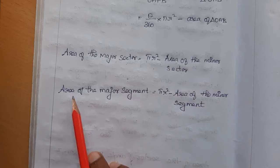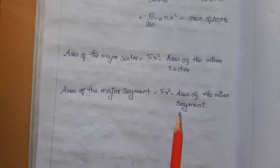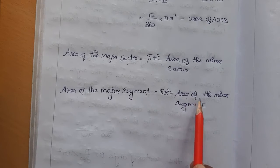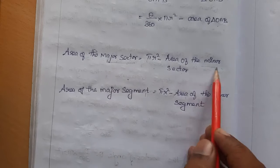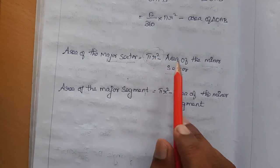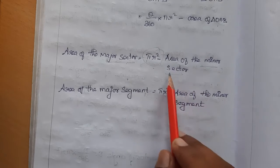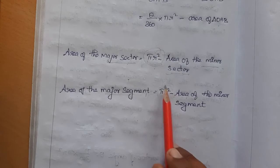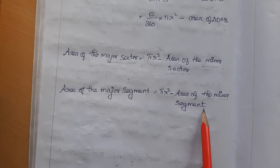For the area of triangle OAB, we can use (1/2) × base × height, Heron's formula, or the equilateral triangle formula depending on what is given. For the major segment: area of major segment = πr² minus area of minor segment. Similarly, area of major sector = πr² minus area of minor sector.